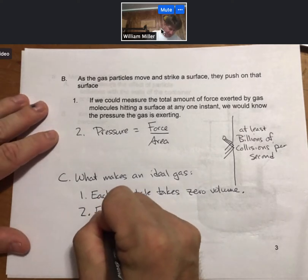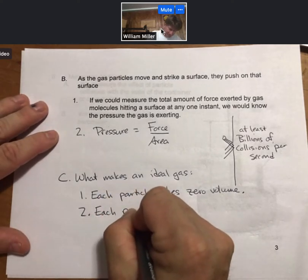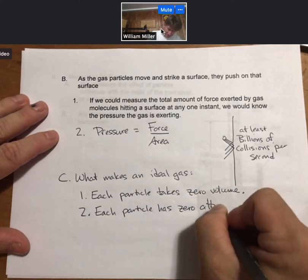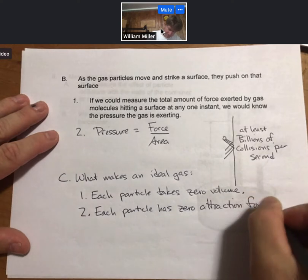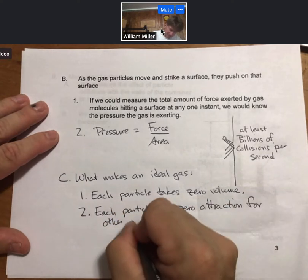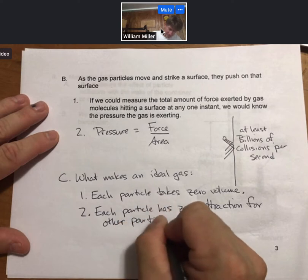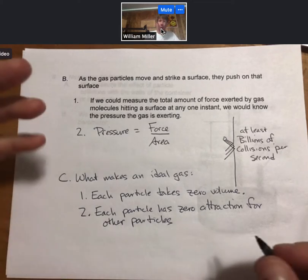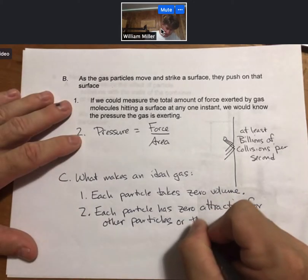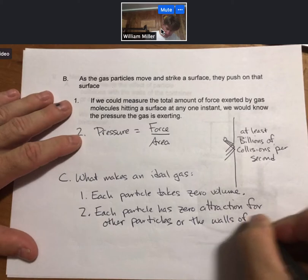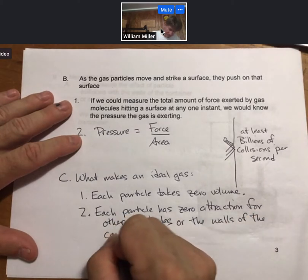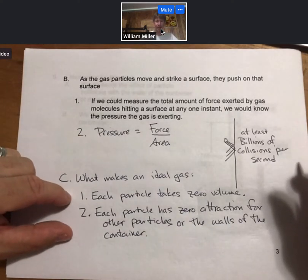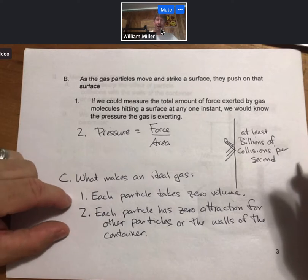And each particle has zero attraction for other particles or the walls of the container. Each particle has zero attraction for other particles or the walls of the container. And so these two things will make an ideal gas.